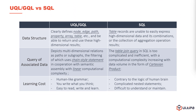UQL overtakes SQL in many aspects. Regarding data structure, traditional SQL defines only table records, which are unable to easily express high-dimensional data and its combination or their aggregation result, while UQL clearly defines various high-dimensional data structures, such as node, edge, path, property, array, and table, and can return and use these high-dimensional results.